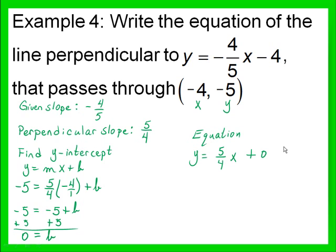So to recap: first, find the slope of the given line. Second, use the negative reciprocal to find the slope of the perpendicular line. Third, plug in the ordered pair for x and y into the slope-intercept equation together with the perpendicular slope and find the y-intercept. Then take that information and write the equation. So let's keep going.